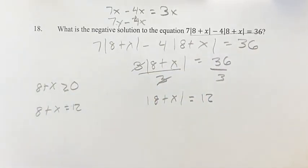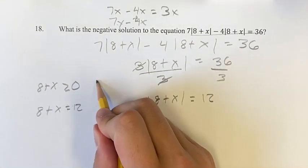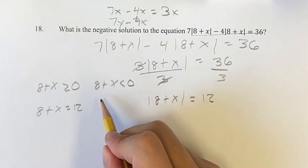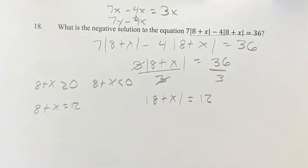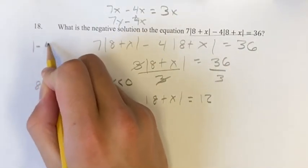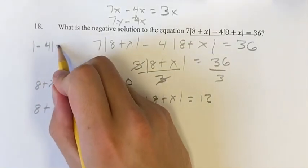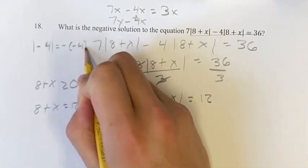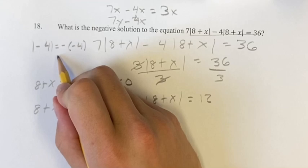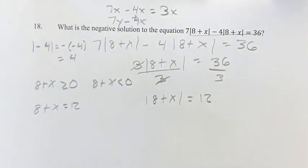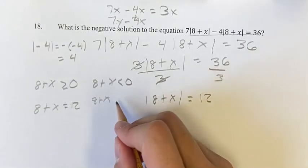If it's equal to 0, same sort of thing. But if 8 plus x is less than 0, then the absolute value of 8 plus x is going to be its negative. So the absolute value of negative 4 is not negative 4 itself. It's negative negative 4. Because the absolute value of negative 4 is equal to positive 4. Same sort of thing here. We get 8 plus x is equal to its negative, so negative 12.